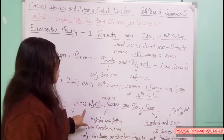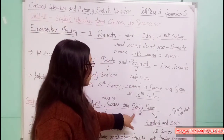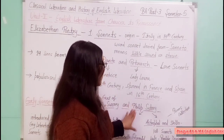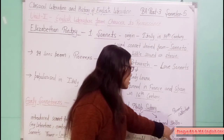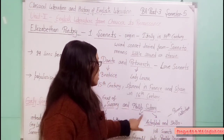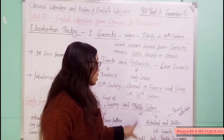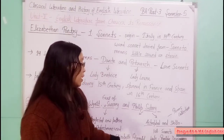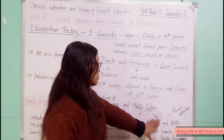Thomas Wyatt and the Earl of Surrey's sonnet poetry eventually faded and was not very popular. The next major sonneteer is Philip Sidney. Philip Sidney is the greatest sonneteer of the Elizabethan age after Shakespeare. Philip Sidney's sonnets are collected in 'Astrophil and Stella.' This is a poetry collection containing a total of 108 sonnets and 11 songs. Philip Sidney composed his sonnets dedicated to Lady Penelope Devereux, who was married to Lord Rich.